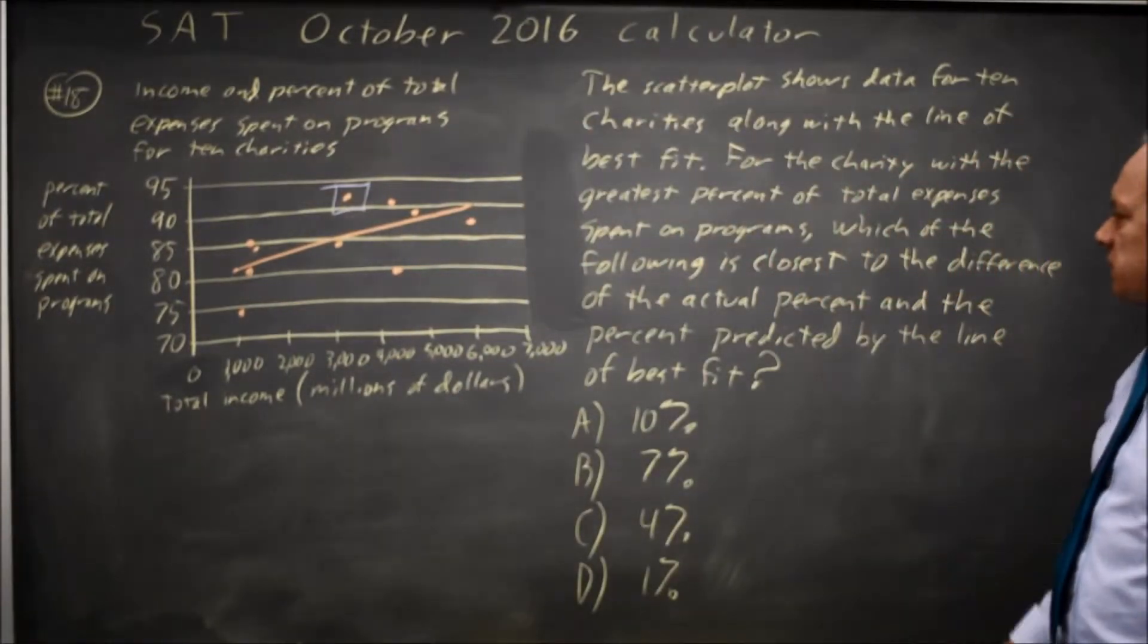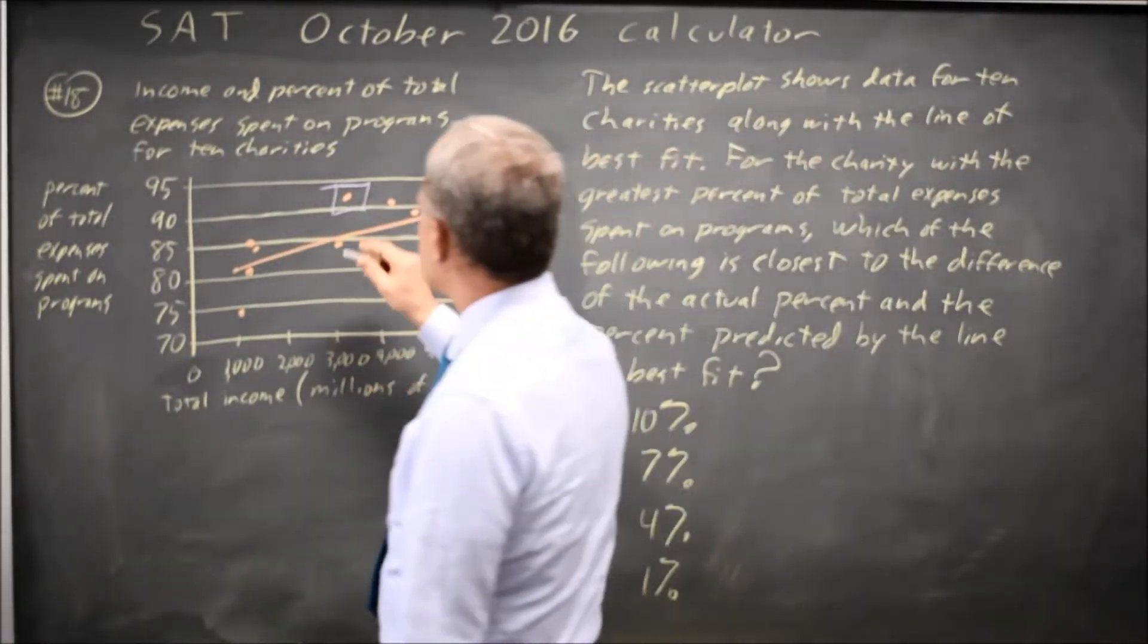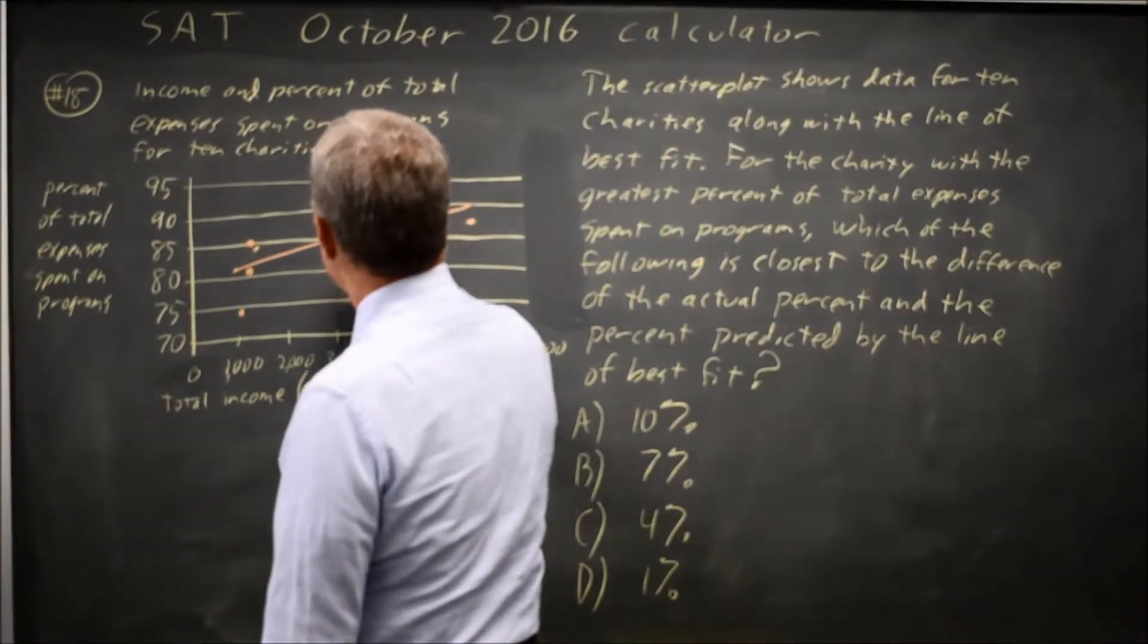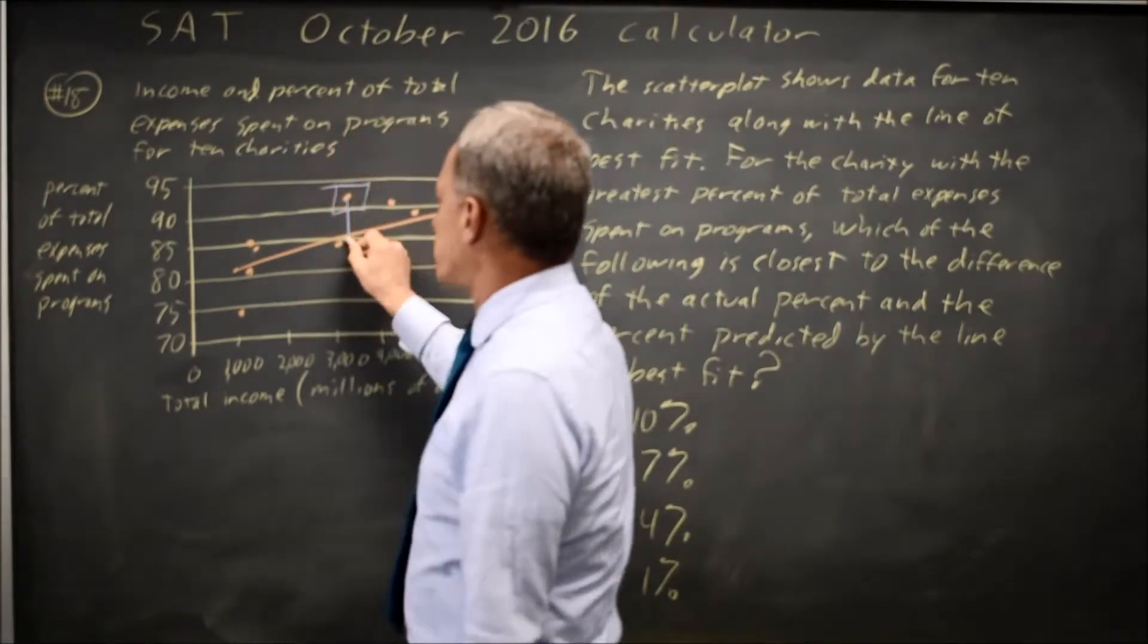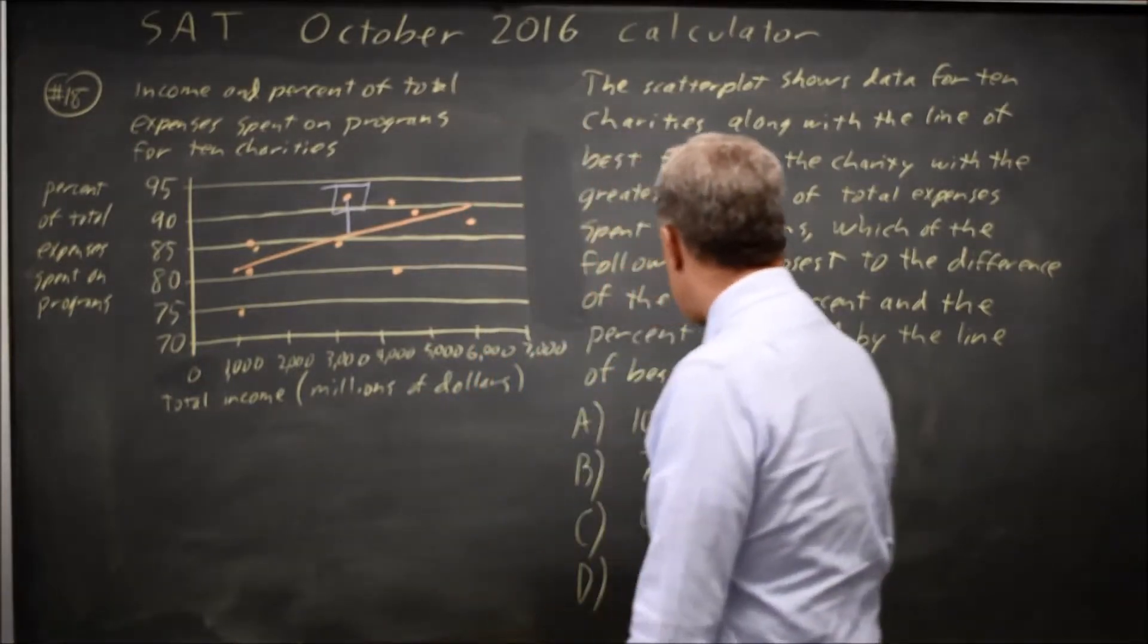which of the following is closest to the difference of the actual percent and the percent predicted by the line of best fit? So that is this distance. The line of best fit predicts just over 85, and this is more or less 92, or just over 92.